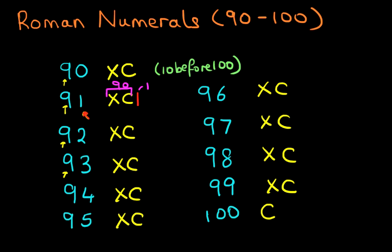Now for 92, we write down XC. How do we write the two down? Nice and simple. It is just II. So therefore 92 is XCII. 93, we've already got the XC. We write down one, two, three.